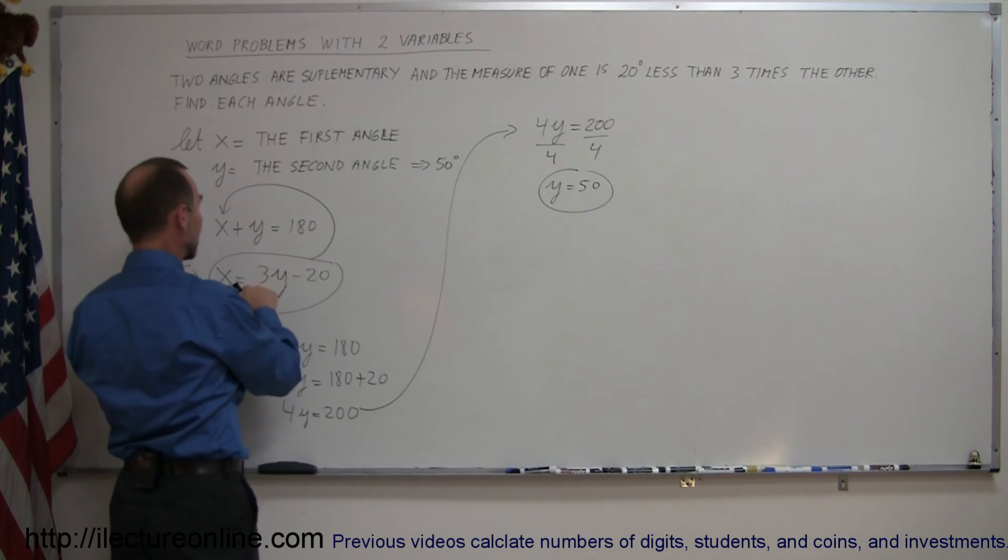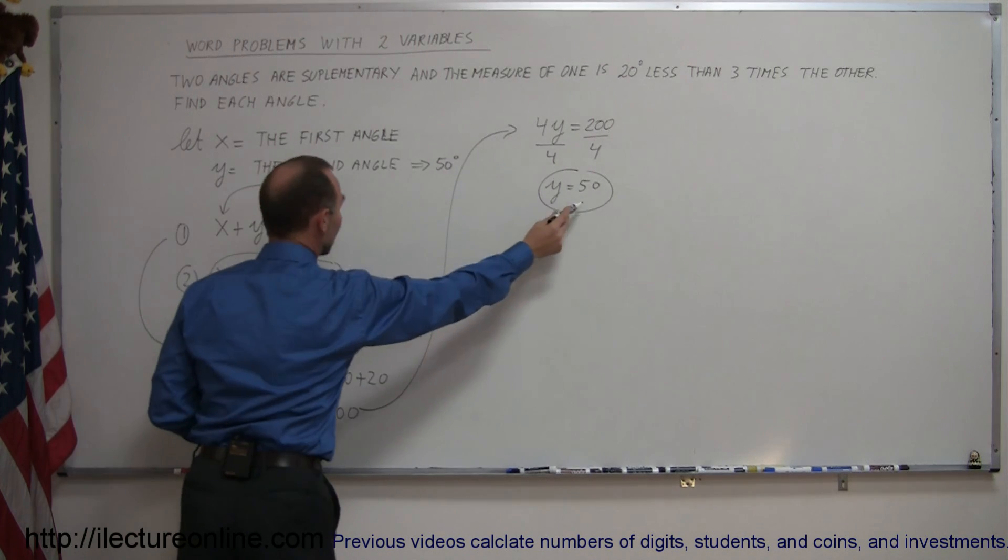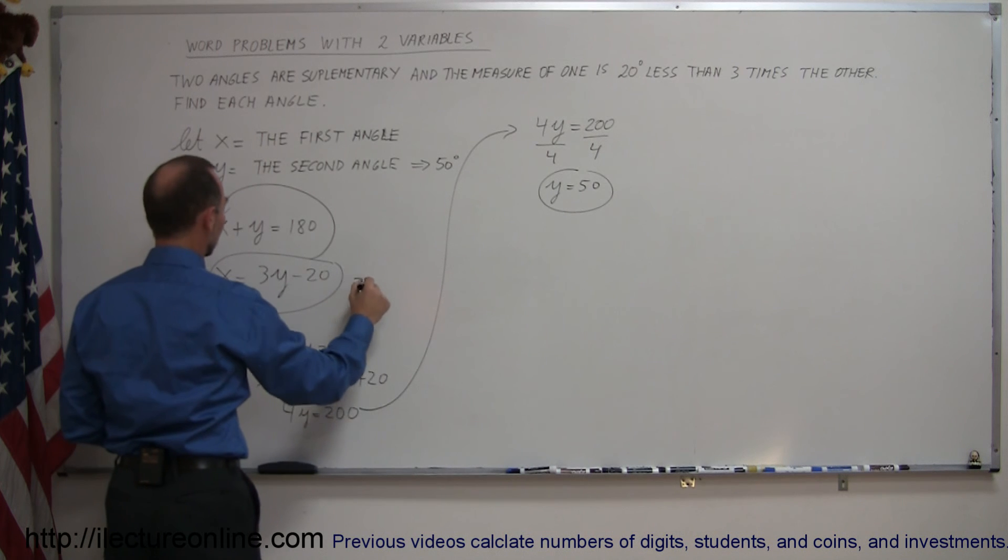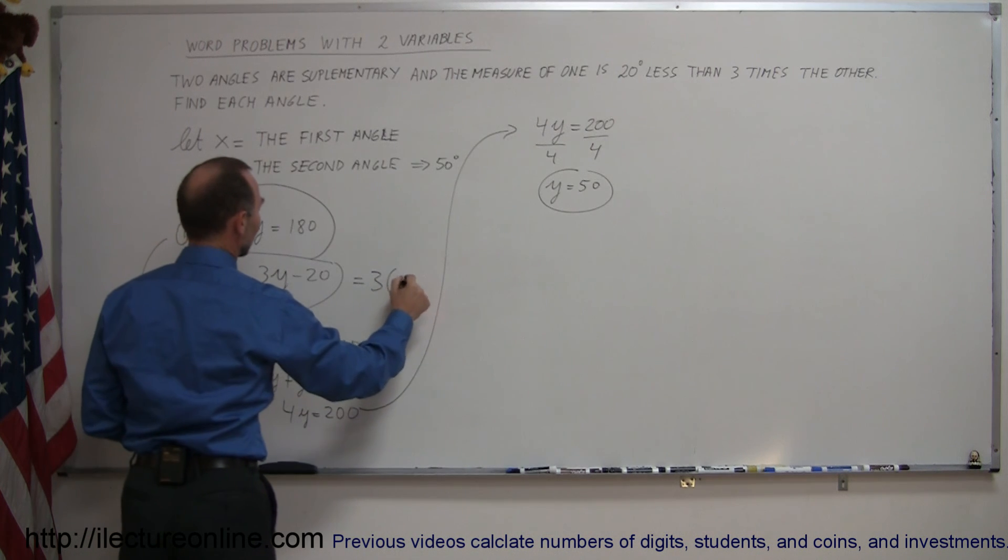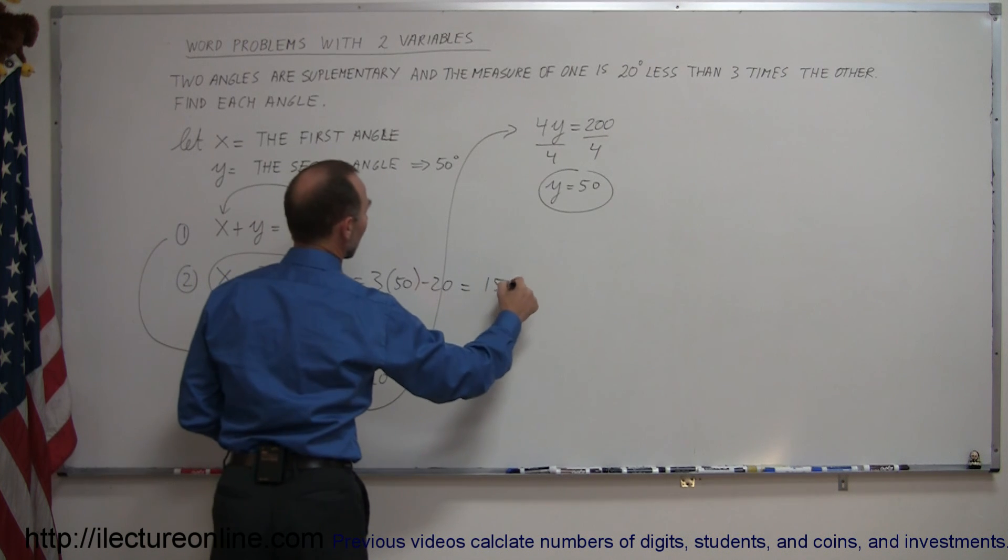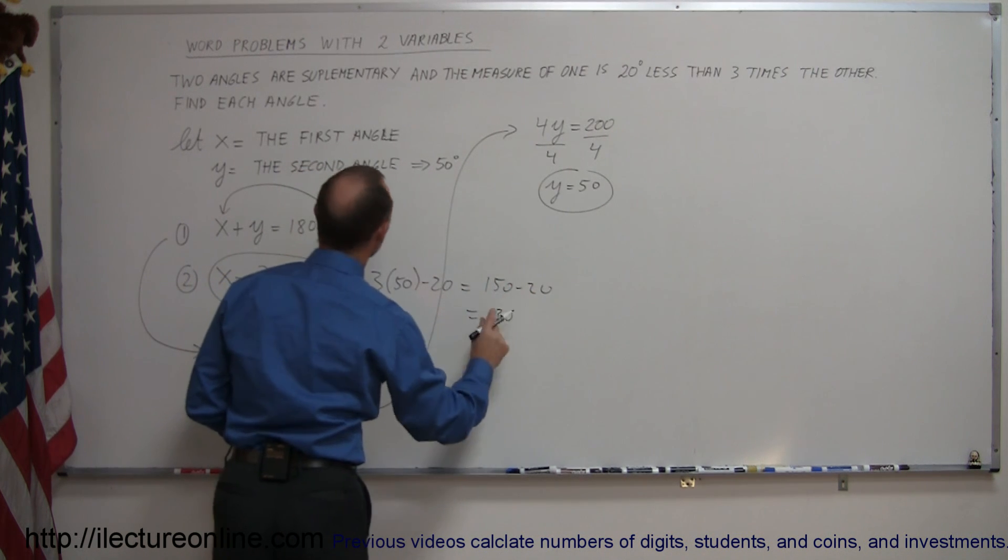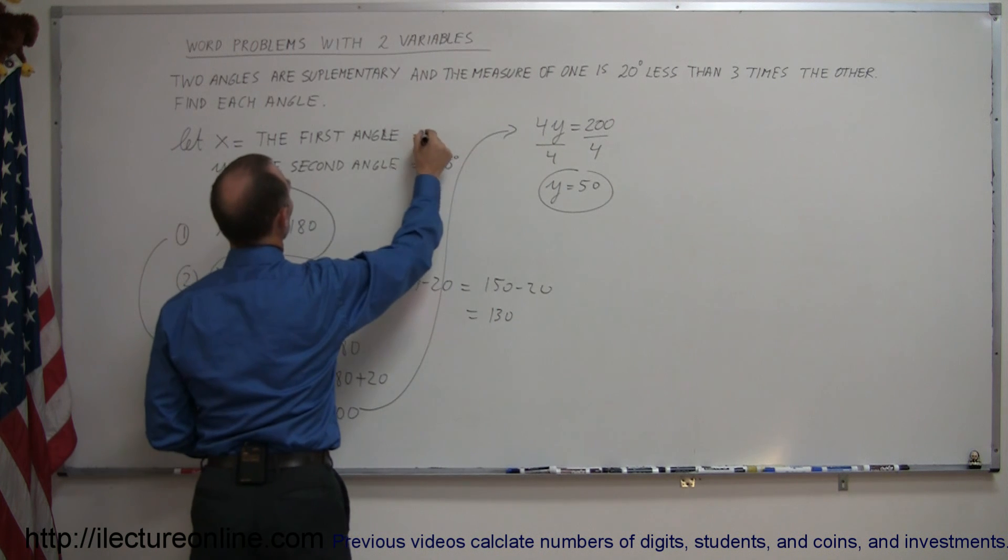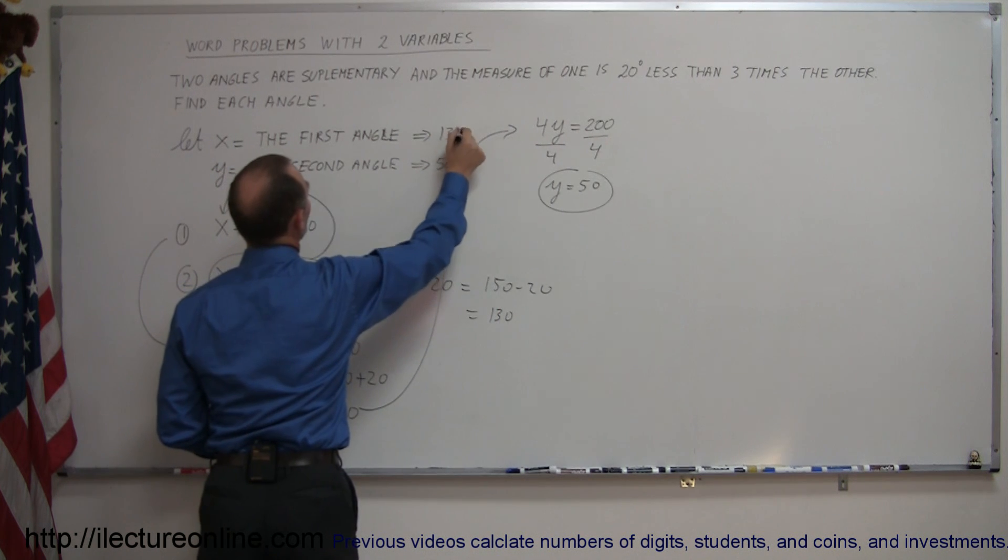Or, I can just plug it right in here. I can say, all right, plug the y equals 50 into my equation here. So this is equal to 3 times 50 minus 20, which is equal to 150 minus 20, which of course is equal to 130, which means that the first angle I chose has to be 130 degrees.